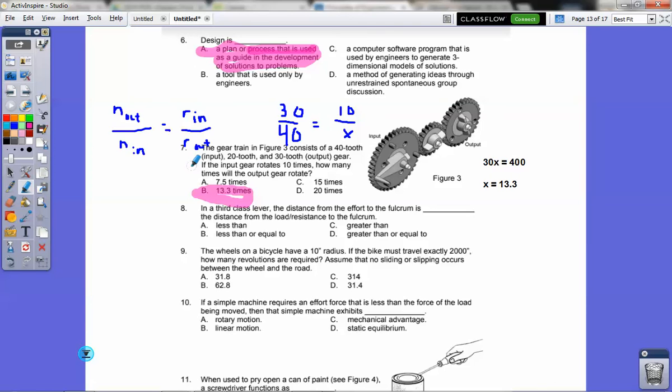Question number eight. In a third class lever, the distance from the effort to the fulcrum is blank the distance from the load to the fulcrum. In a third class lever, where is the effort? Is it in the middle or is it on an edge? Well, in a third class lever, the effort is actually in the middle. That means the distance from the effort to the fulcrum is less than the distance. It's definitely less than. It's definitely, because then it's not a lever if it's equal. So less than.